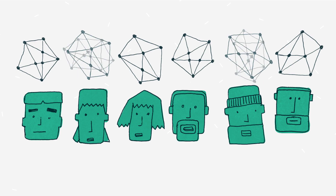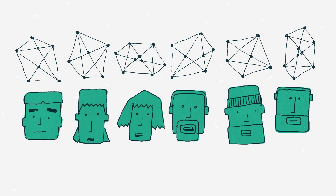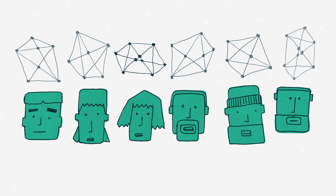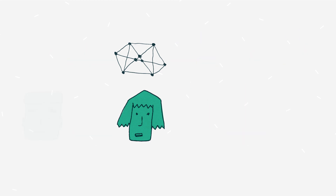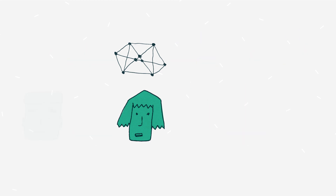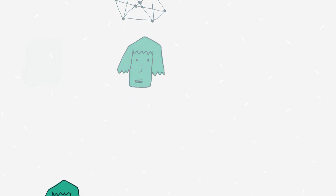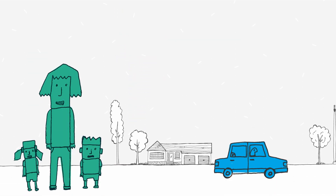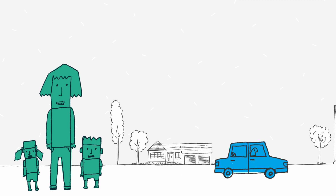Finally, we use computer simulation to generate a week of trips and activities for each person. Let's dive in and take a look at one person in the virtual population as an example. In the Replica activity table, we can see this person is in a household of one adult and two kids. She lives in the suburbs and owns a car.